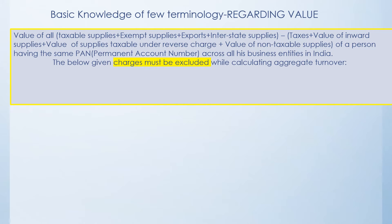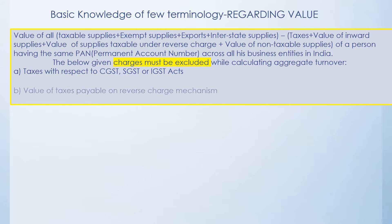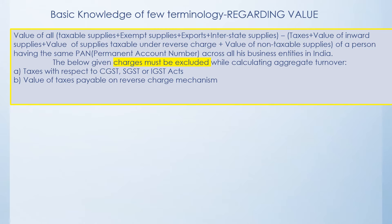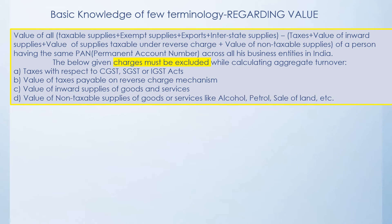The following charges have to be excluded while calculating the aggregate turnover: first, tax with respect to CGST, SGST, or IGST — the tax element has to be minused. The value of tax payable on the reverse charge mechanism also has to be deducted. The value of any inward supply of goods or services also has to be excluded. That means if there is a sale return, it has to be deducted. Also, the value of any non-taxable goods like alcohol, petrol, or sale of land or building is not to be considered when determining the liability.